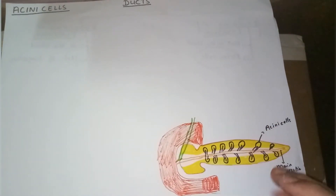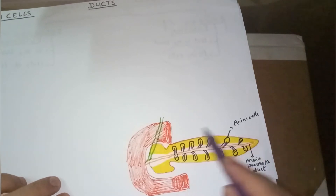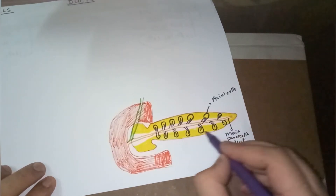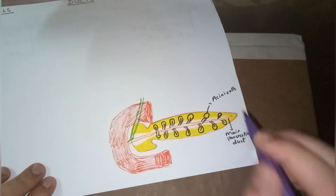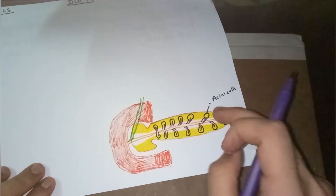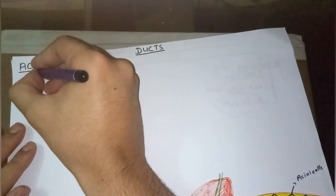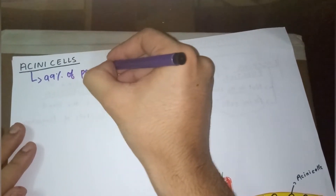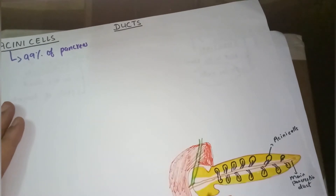I've made a simple diagram to explain the physiology of pancreas. You can see the pancreas here, and the black markings represent the acinar cells present throughout the pancreas. Only one percent of the pancreas is other tissue — acinar cells comprise 99% of the pancreas.